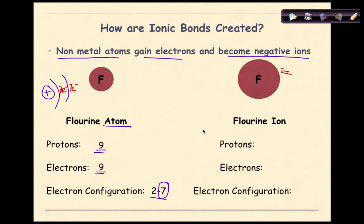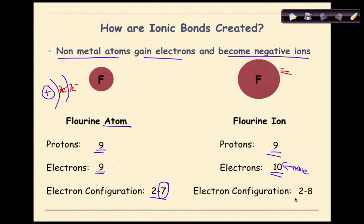Looking at the fluorine ion: it still has 9 protons, but now the number of electrons is greater than the number of protons, which is why it has a negative charge. The electron configuration becomes 2-8, which is the same as neon — making it more stable in that respect as well.